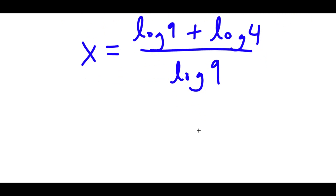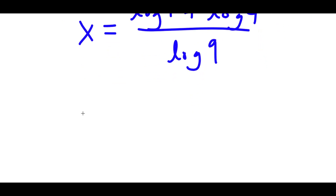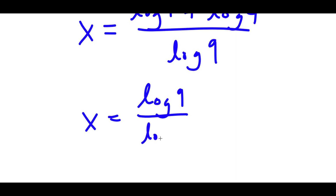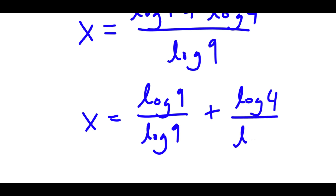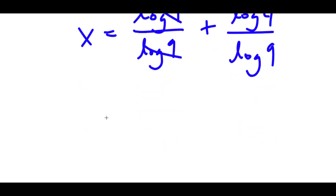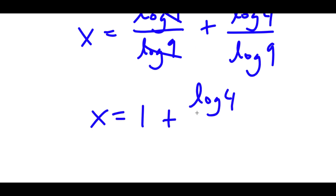Now, this is the same thing as log 9 over log 9 plus log 4 over log 9. Now, log 9 and log 9 — these two cancel out. So I get x is equal to 1 plus log 4 over log 9.